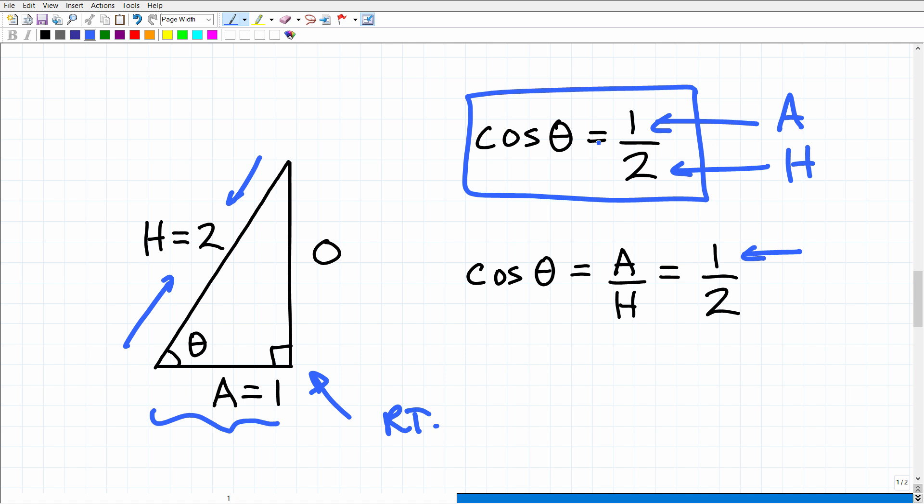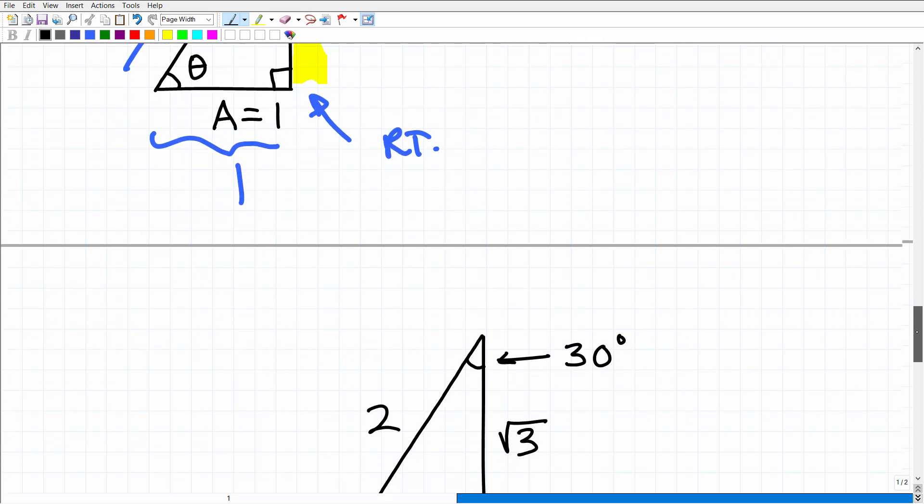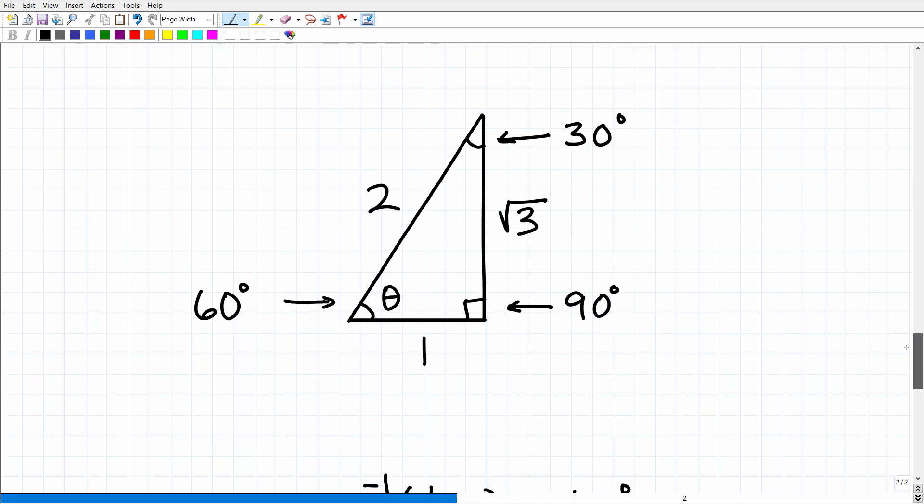And the hypotenuse equal to 2. All right, so when we reconstruct this right triangle's measurements based upon the cosine theta of this angle is 1 half, we come up with the right triangle like so. So basically the adjacent is 1. The hypotenuse is 2. And obviously it's pretty easy to solve for this side of the triangle using the Pythagorean Theorem, right? A squared plus B squared would equal C squared. We can get this side right there. However, you should look at this triangle and you should identify it as a special right triangle.